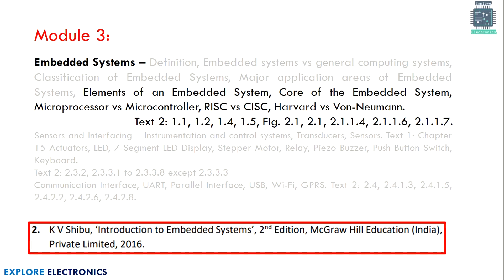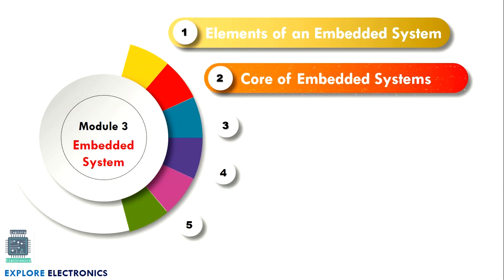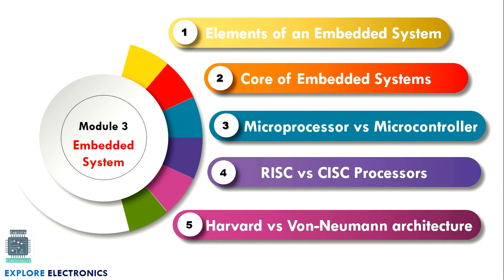Hello everyone, welcome to this video. In the previous video, we covered embedded systems versus general purpose systems, classification of embedded systems, and a few application areas. In this video, let us get into the next topics: elements of embedded systems, core of embedded systems, the difference between microprocessor and microcontroller, RISC processors, and Harvard and von Neumann architectures.